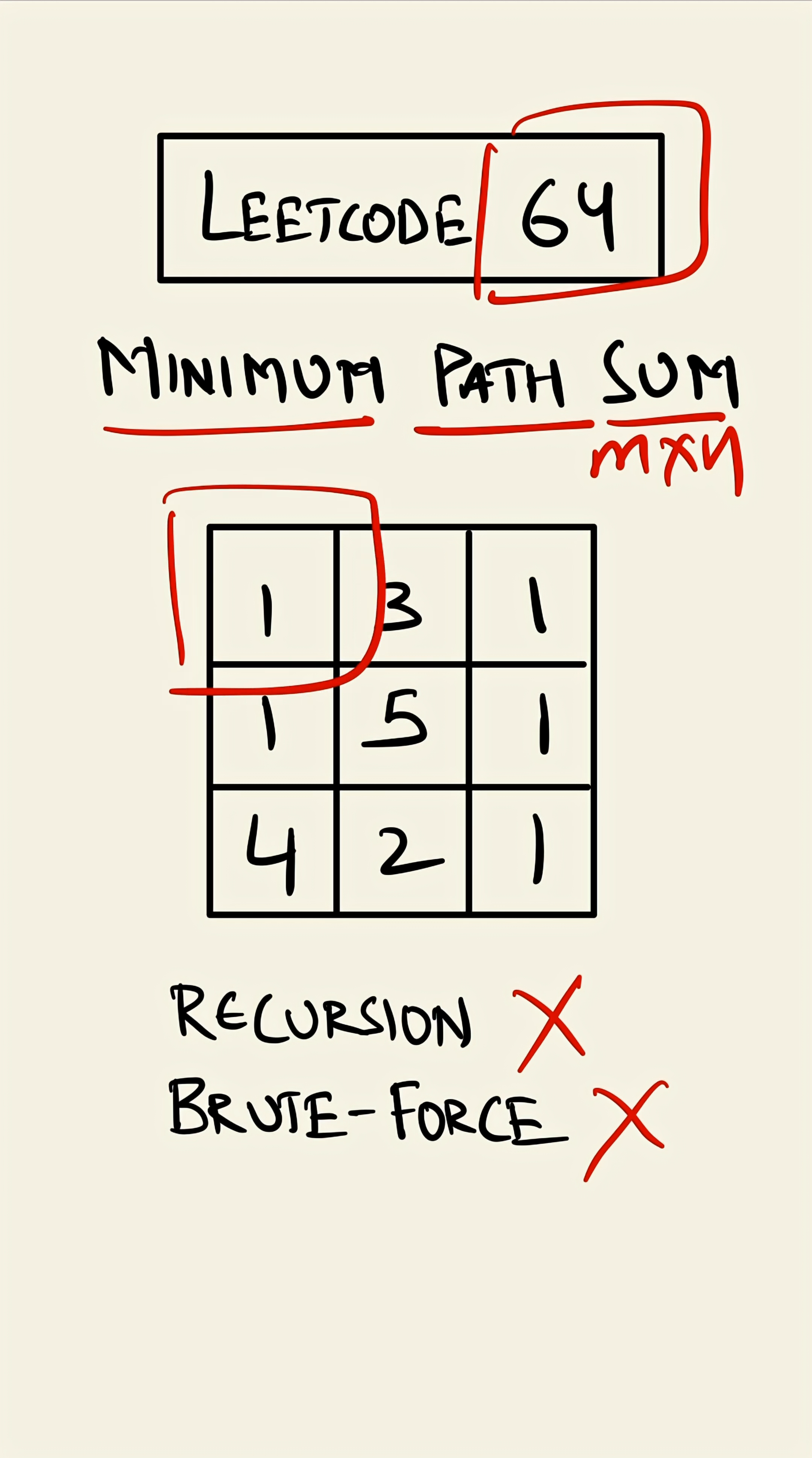We'll start at top left and we have to reach bottom right. The only way a person can travel is either to its right or downward, and we have to minimize the cost of reaching from top left to bottom right.